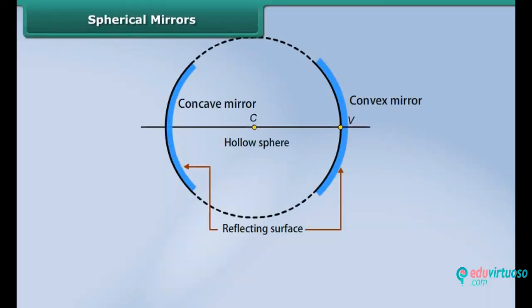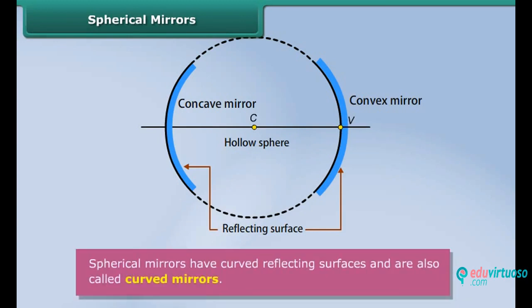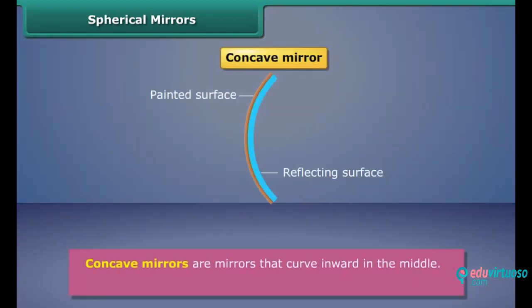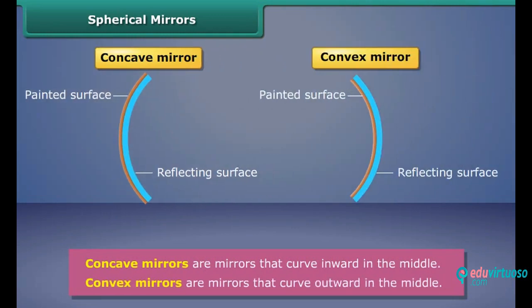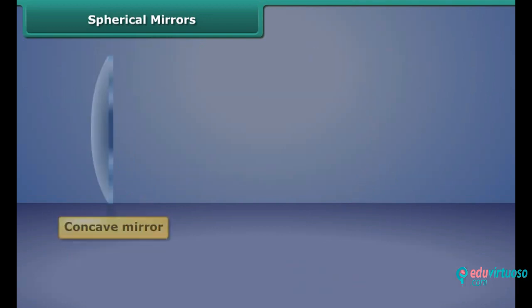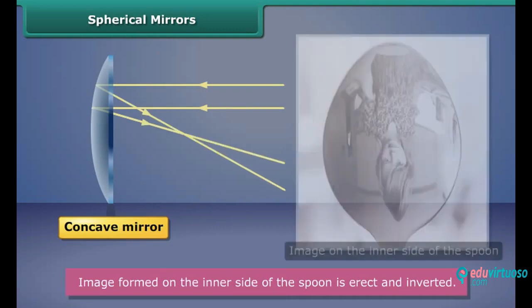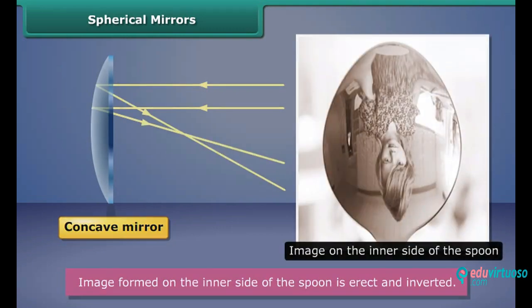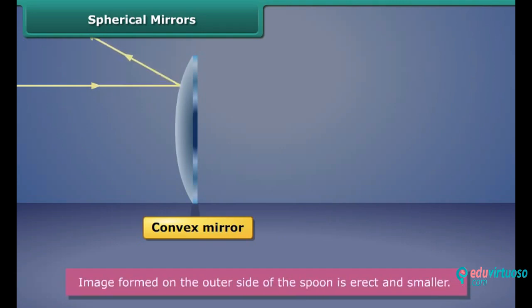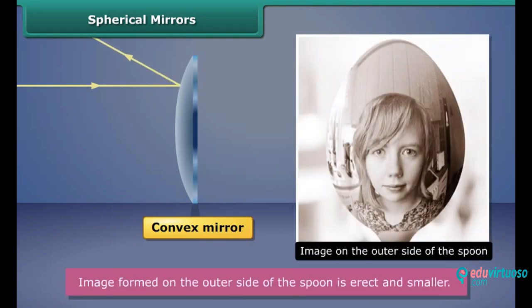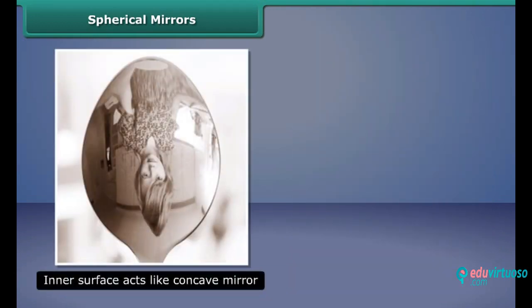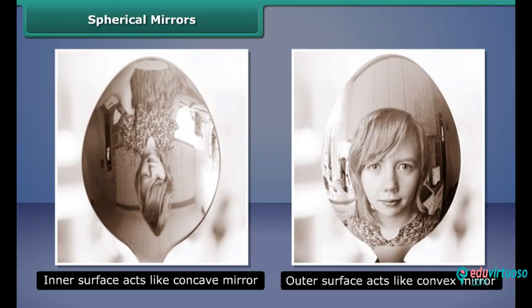Spherical mirrors have curved reflecting surfaces and are also called curved mirrors. There are two kinds of spherical mirrors: concave mirror and convex mirror. Concave mirrors are mirrors that curve inward in the middle, whereas convex mirrors are mirrors that curve outward in the middle. Concave mirrors reflect light from their inner surface, like the inside of a spoon. The outer surface of a spoon acts like a convex mirror. Hence, the inner surface of a spoon acts like a concave mirror, while its outer surface acts like a convex mirror.